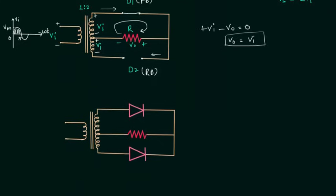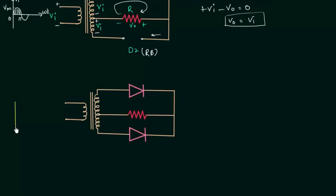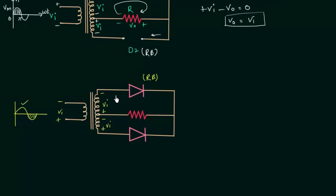Now I will analyze this circuit for the negative half cycle, from Pi to 2Pi. In the negative half cycle the polarity is minus, plus, so here we have minus, plus, minus, plus. Diode D1 is reverse biased because the direction of current is anticlockwise and does not match the direction of the arrow. Diode D2 is forward biased. I will replace D1 with an open circuit and D2 with a short circuit.